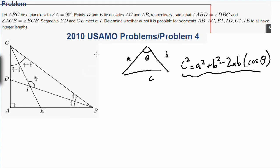So we have to see whether or not it's possible for segments AB, AC, BI, ID, CI, IE to all have integer lengths. So let's assume a few things. Let's assume that CI, BI, AC, and AB have integer lengths. So assuming that CI, BI, AC, and AB have integer lengths.